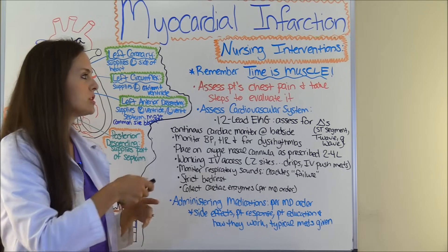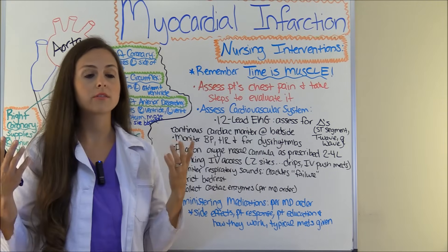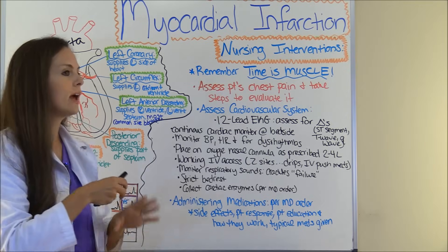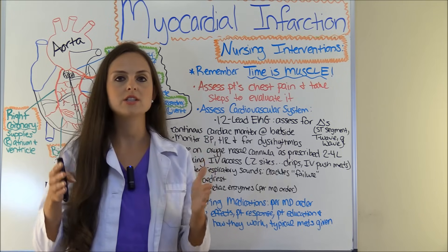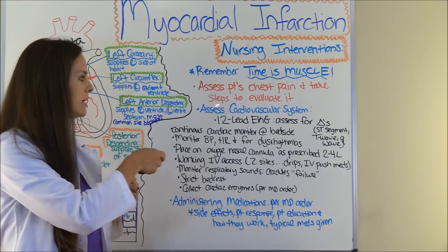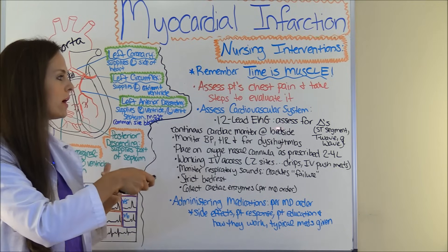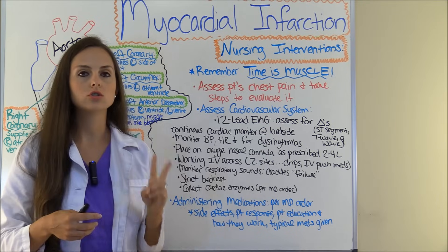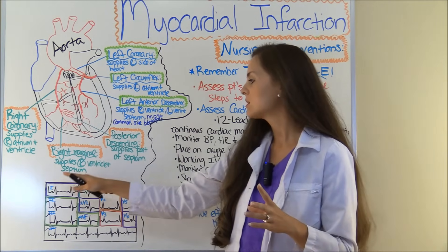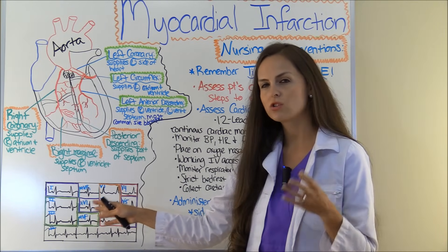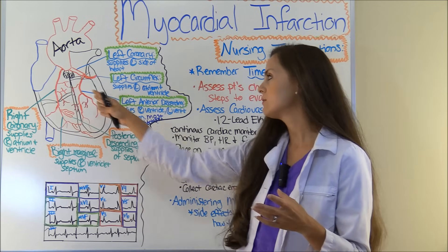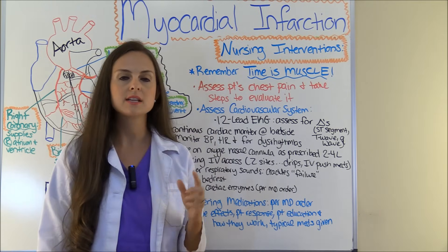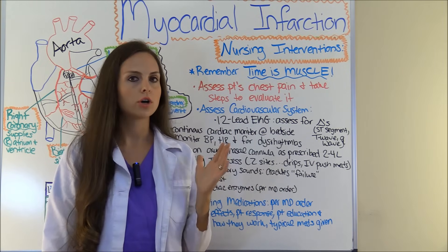We will assess our patients for chest pain. A lot of times patients will tell you, but if they're there for cardiac issues, you always need to assess them because some patients may not tell you. Hospitals have protocols for whenever a patient has chest pain. Typically you're going to start assessing the cardiovascular system and get a 12-lead EKG per physician's order. You need to look at that EKG — you're looking for ST segment elevation or depression, looking at T waves (are they hyper-acute or inverted), and you're looking for pathological Q waves.